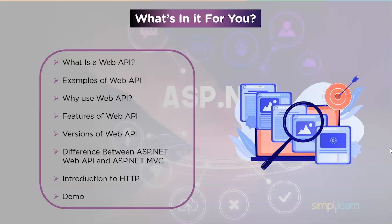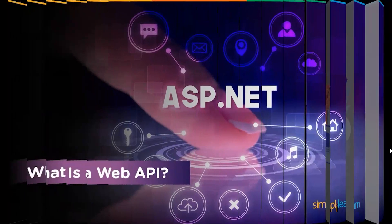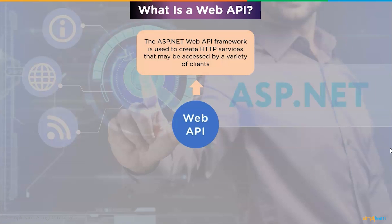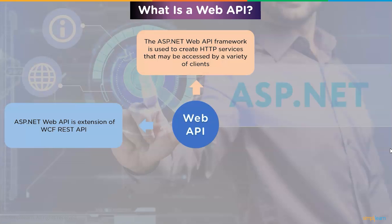What is a Web API? The ASP.NET Web API framework is used to create HTTP services that may be accessed by a variety of clients including browsers, mobile phones, and tablets. ASP.NET Web API is the extension of WCF REST API — in a nutshell, it's a replacement for the WCF REST API. It's compatible with ASP.NET MVC and other web applications such as ASP.NET Web Forms. ASP.NET Web API is an excellent foundation for developing RESTful apps.